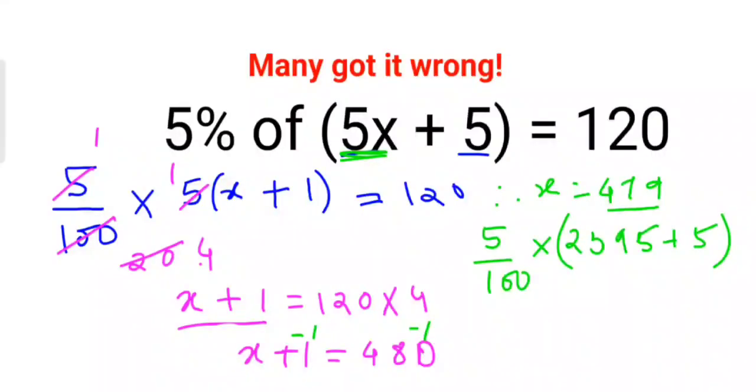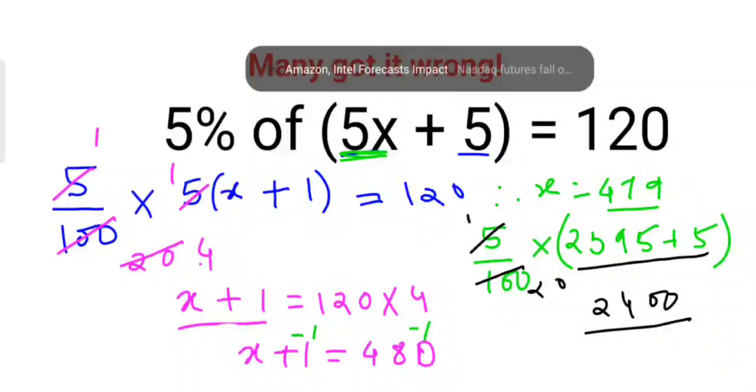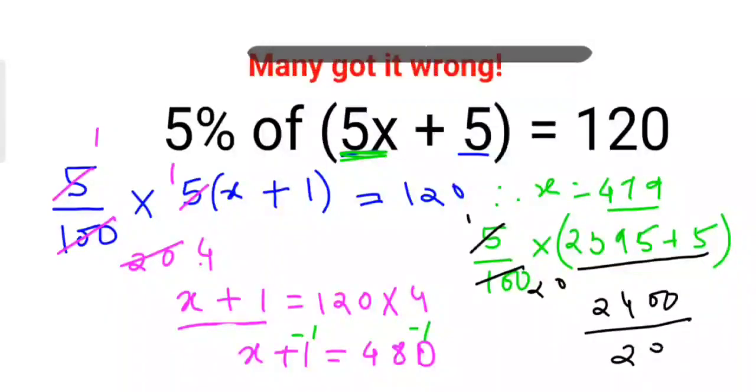So what we get over here is this is 5s are and 20s are. And this entire bracket comes out to be what? 2400 divided by 20. So now your answer comes out to be 2, 5s are and 1, 120.